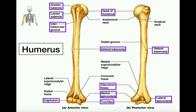That pretty much covers the major structures on the proximal side of the humerus. If we go down a little bit further, about midway down the bone, we have what's called the deltoid tuberosity. This can actually be seen from both the anterior and posterior view, and if you feel this on a model, you should be able to run your finger down it and feel this bump. The deltoid tuberosity is where the deltoid muscle actually attaches onto the humerus, which is why it gets its name.